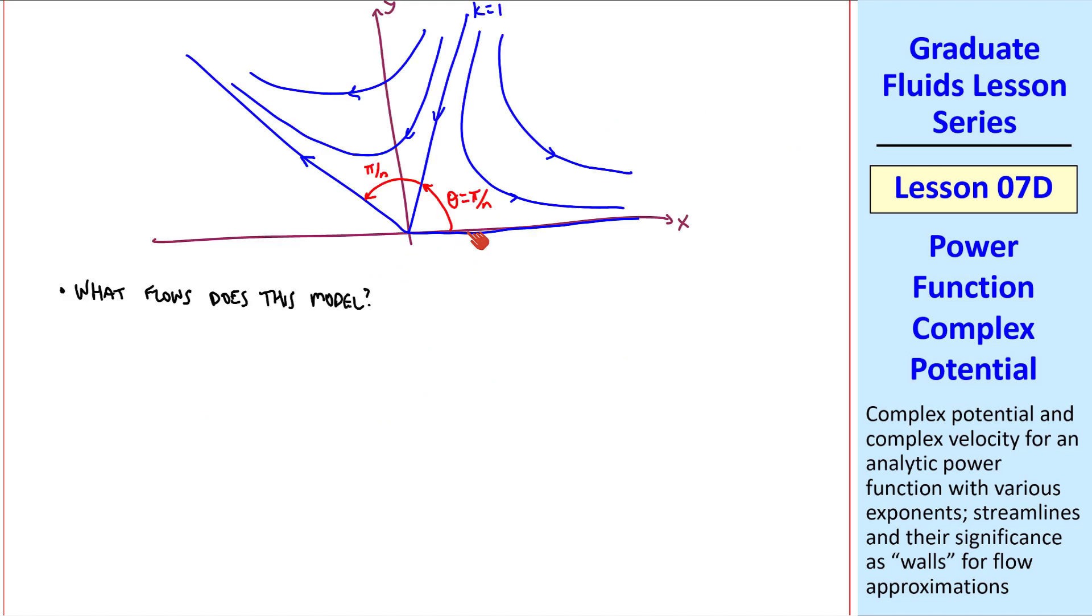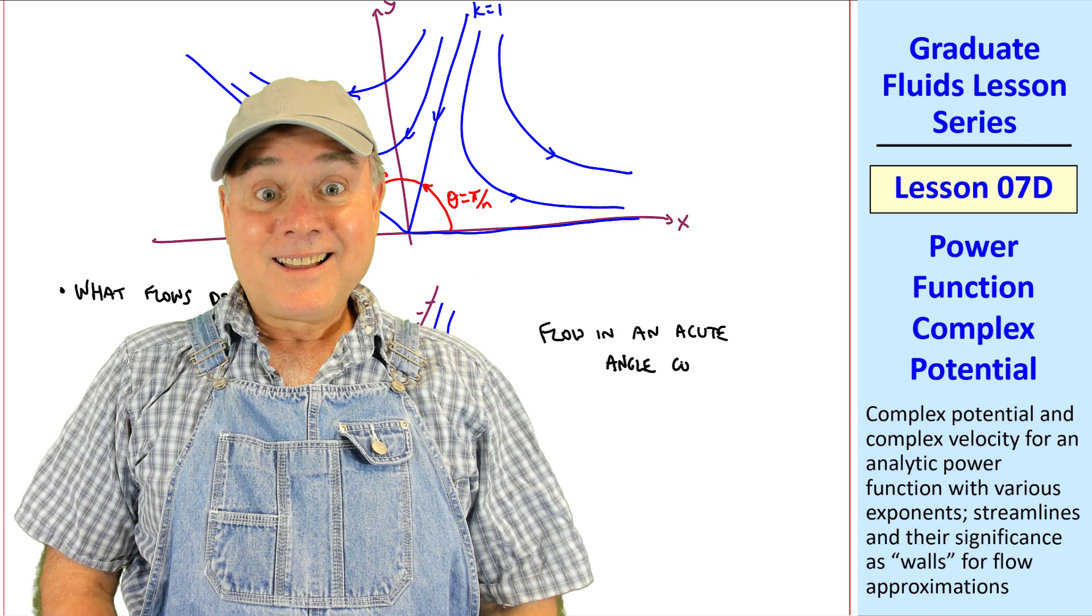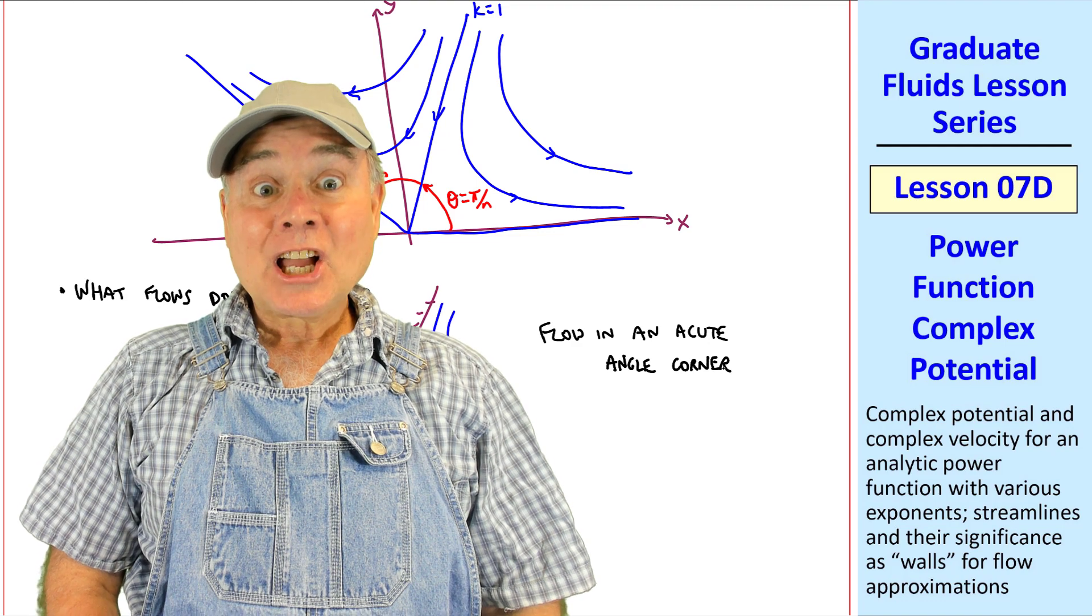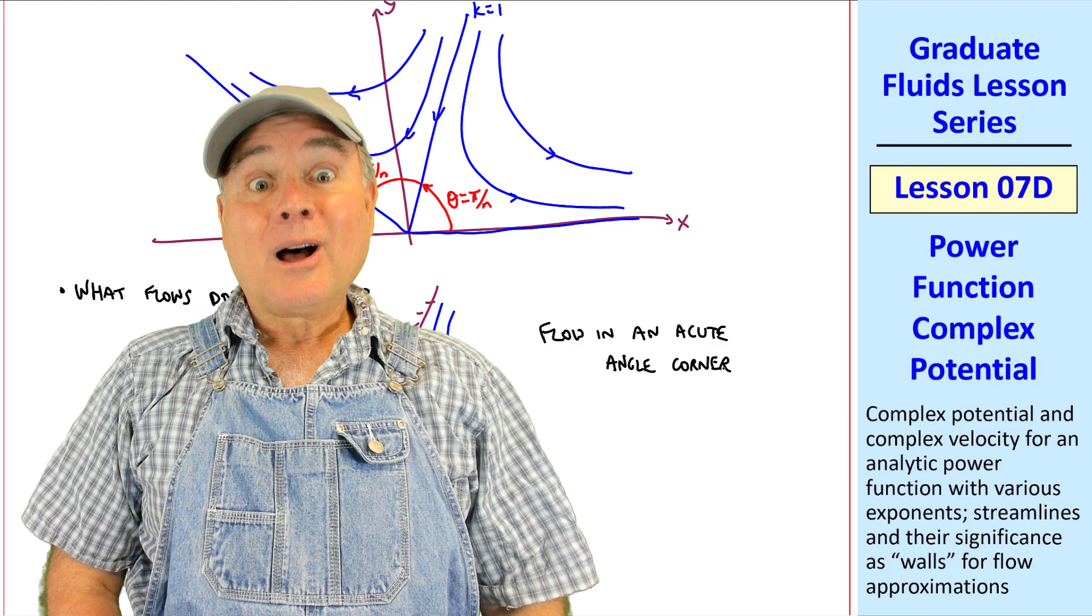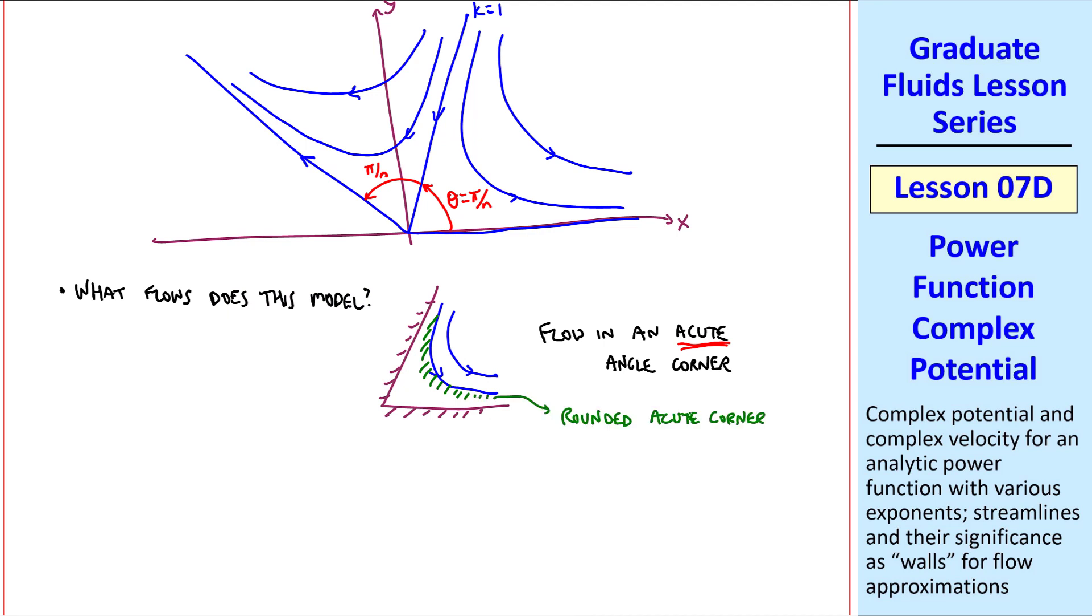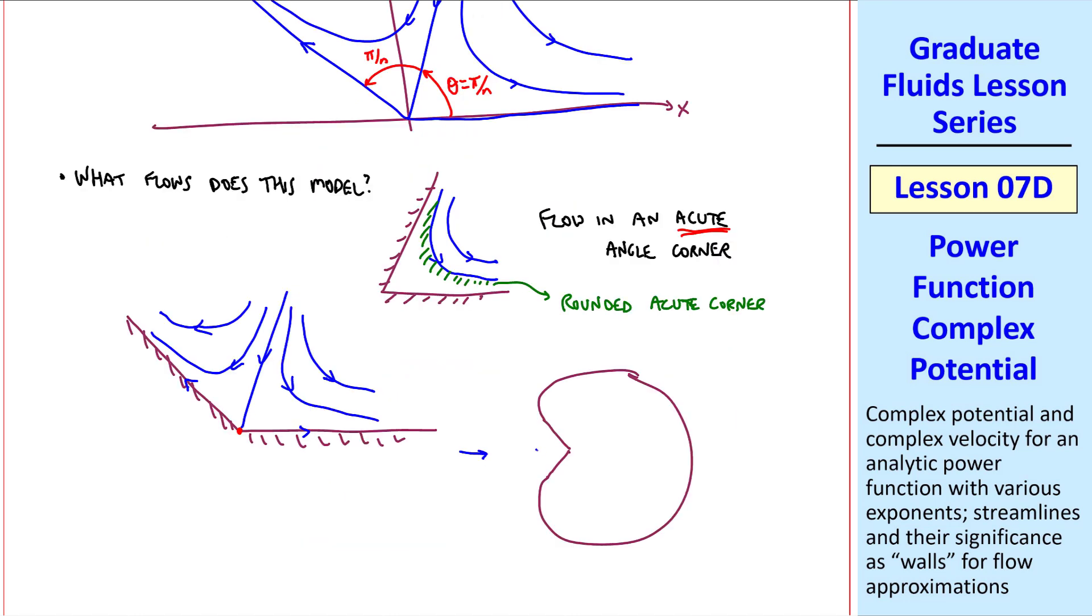Again, what flows does this model? If we take the 0th and the first ray and think of those as walls, we have flow in an acute angle corner. My friend Thud's got a cute kitten named Spud. That's nice, Thud, but acute is one word here, and it means an angle less than 90 degrees. Oh, okay. You could also pick one streamline here, and have flow in a rounded corner, specifically a rounded acute corner. Or we can pick both this streamline and this streamline as walls. And then we have a flow like this, which again has a stagnation point here. So this can perhaps represent flow near the stagnation point of an object like this, shaped kind of like a Pac-Man, where again if you zoom in with a magnifying glass and rotate your head, you would see this flow. We'll call this stagnation flow into a concave corner.